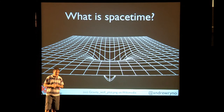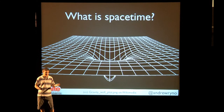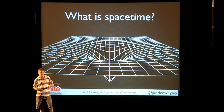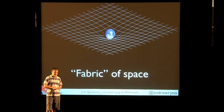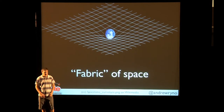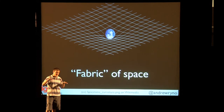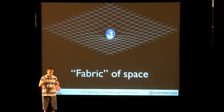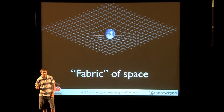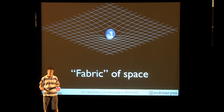Space-time is a coordinate system based on the three spatial dimensions of space: length, width, and depth. It has a fabric of space — think of it as a trampoline, where if you put weight on it, it will distort. Time is also interconnected with the fabric of space.